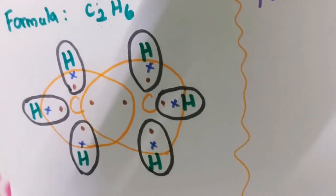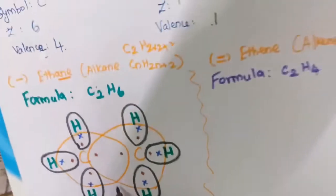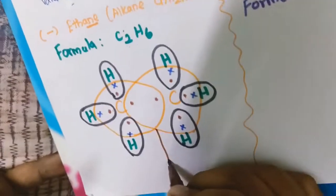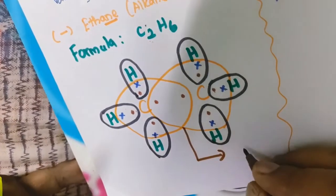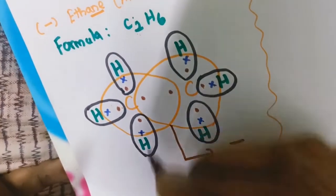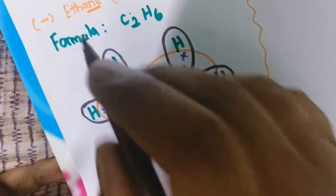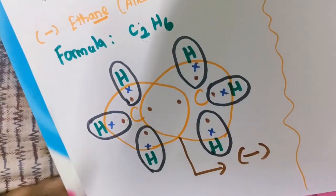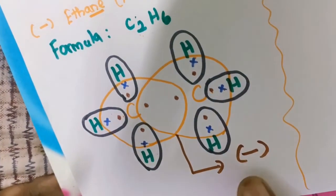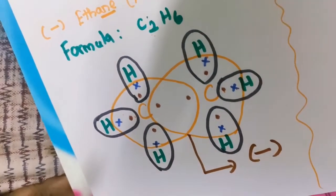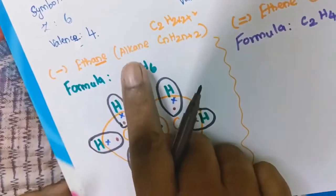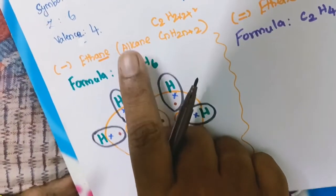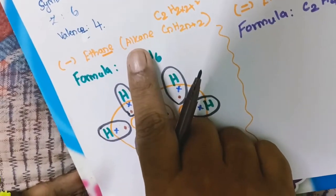The carbon is going to share only 1 electron with each hydrogen. So this compound, ethane, will have only a single bond. The hydrocarbon which has a single bond is called the alkane family.